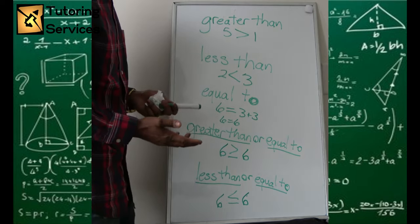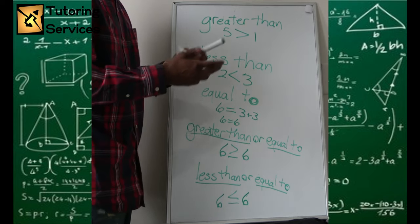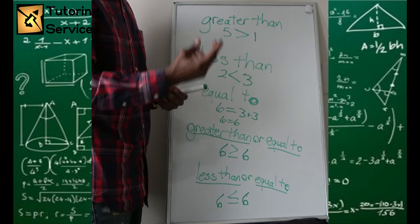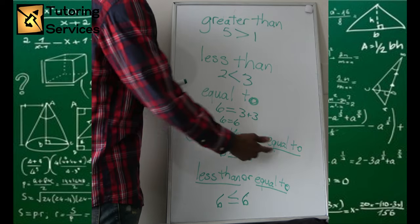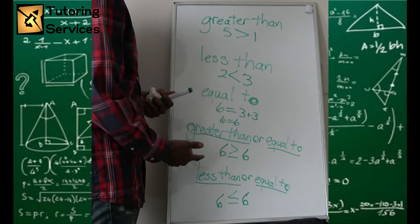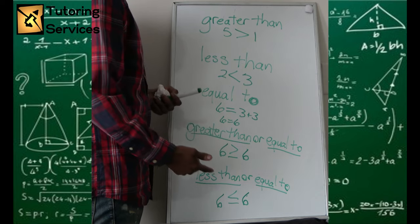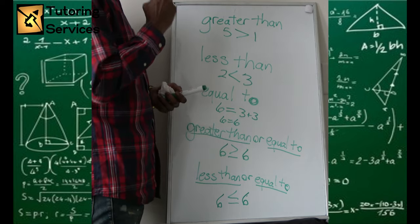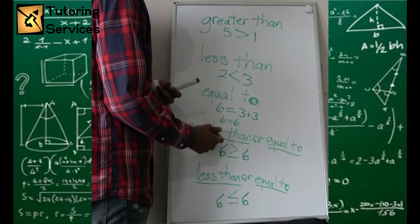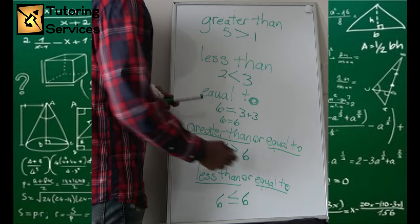Now notice: you can't have something being greater than and equal to, because when you use the word 'and,' both statements have to be true at the same time — and that's impossible. So you're only going to hear about 'or': greater than or equal to, less than or equal to.